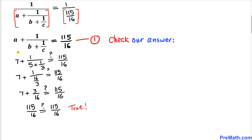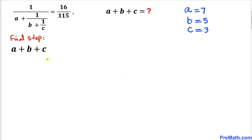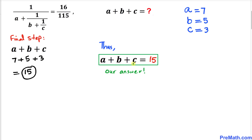Therefore we conclude that a is indeed 7, b is 5, and c is 3 — these are our valid values. Here's our final step: let's find the value of a plus b plus c. So 7 plus 5 plus 3 equals 15. Thus our a plus b plus c value turns out to be 15. Thanks for watching and please don't forget to subscribe to my channel for more exciting videos.